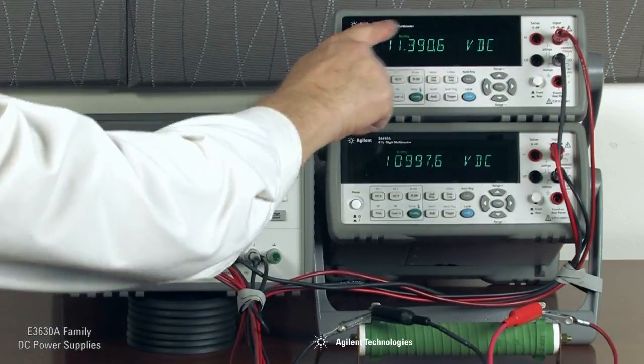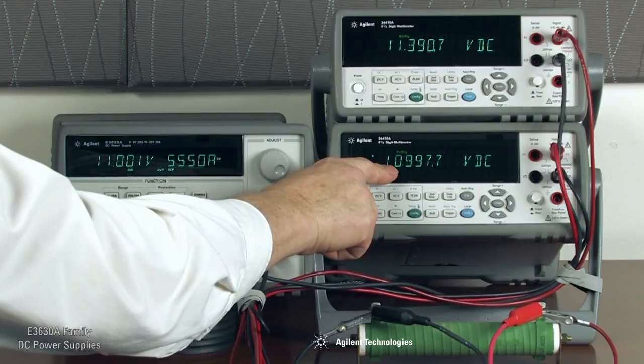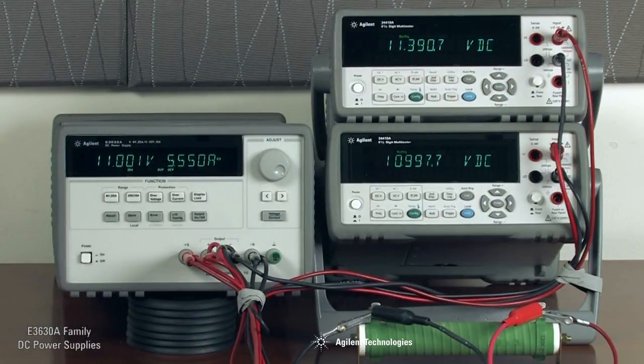However, the power supply is actually outputting 11.39 volts to overcome the voltage drops in the wiring, thus guaranteeing the correct voltage at the load.